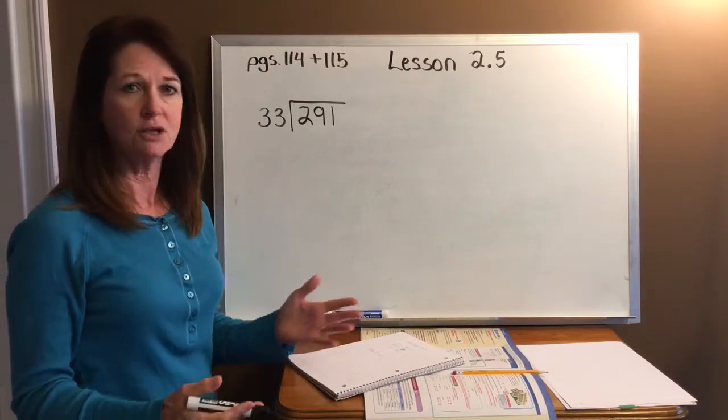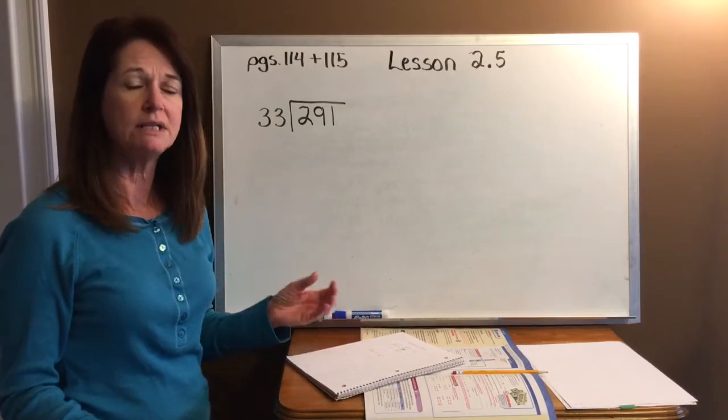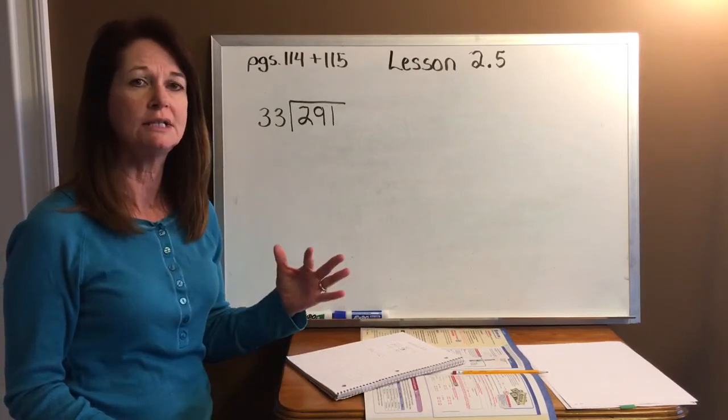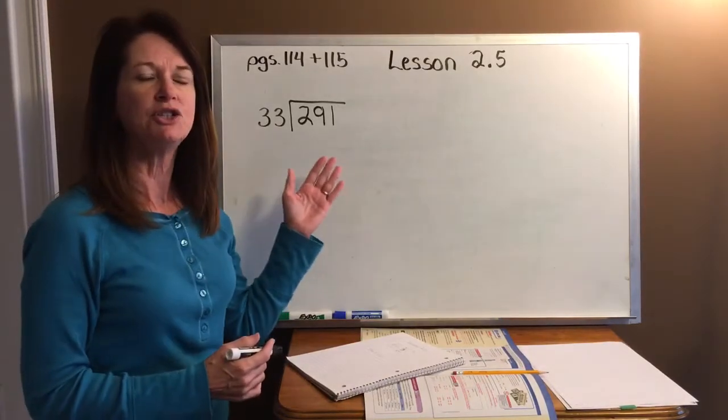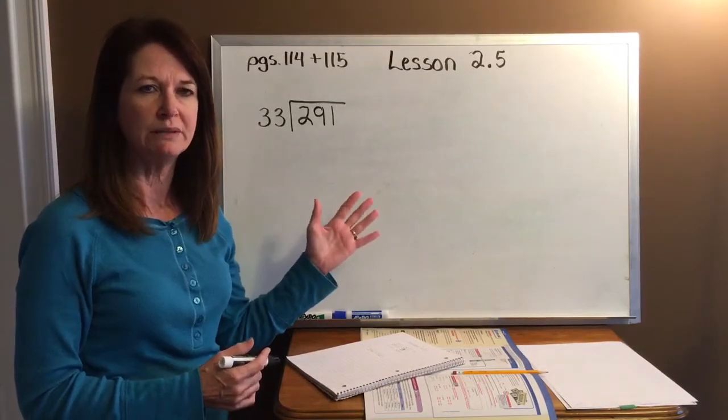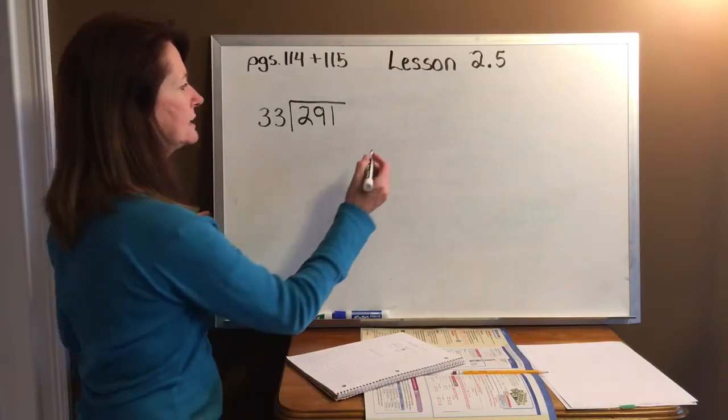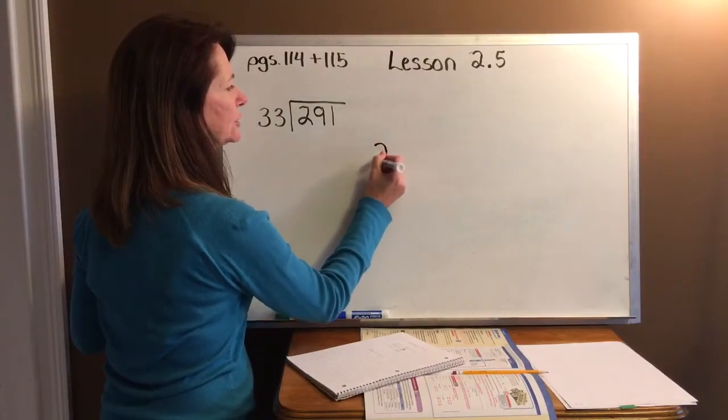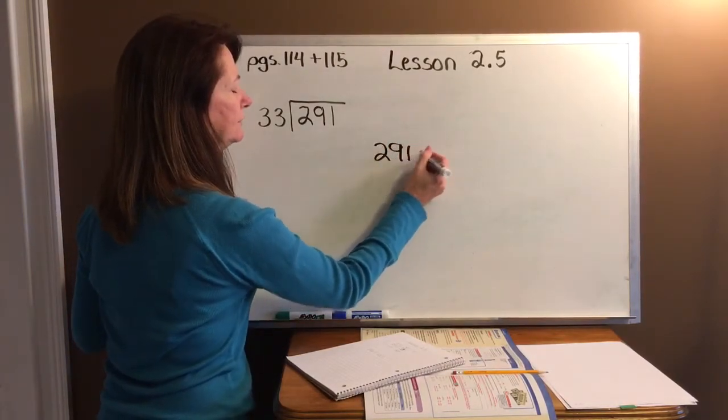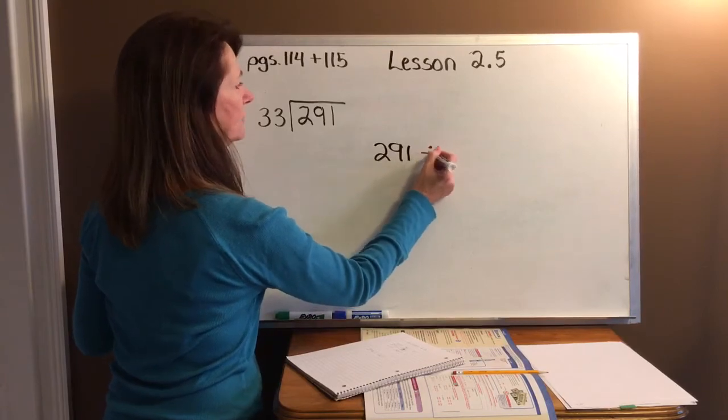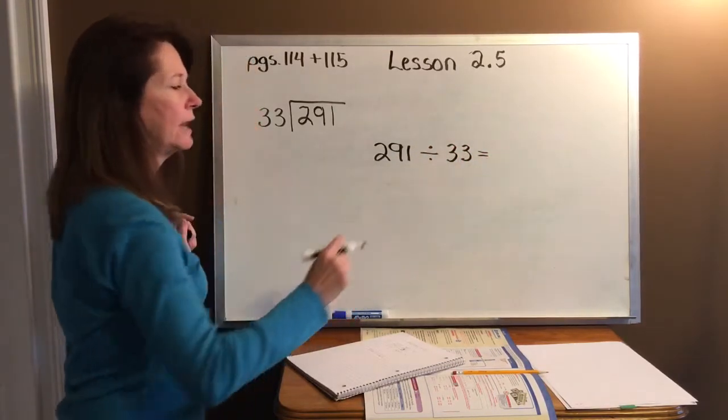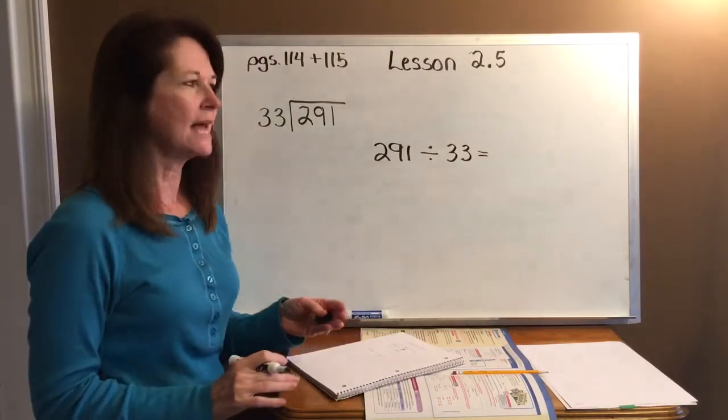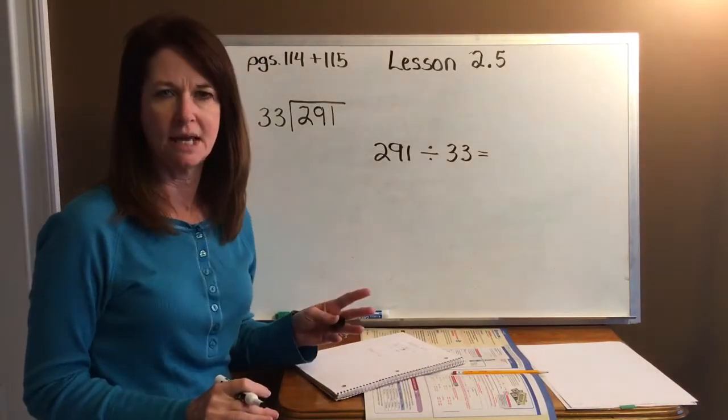So we're estimating. That's all we're doing is estimating. We're wanting to get in the ballpark. We're not looking to solve it right now. So first thing I'm going to do is change the way this division problem is written. I'm going to go ahead and write it as dividend first, which is 291 divided by 33 equals.